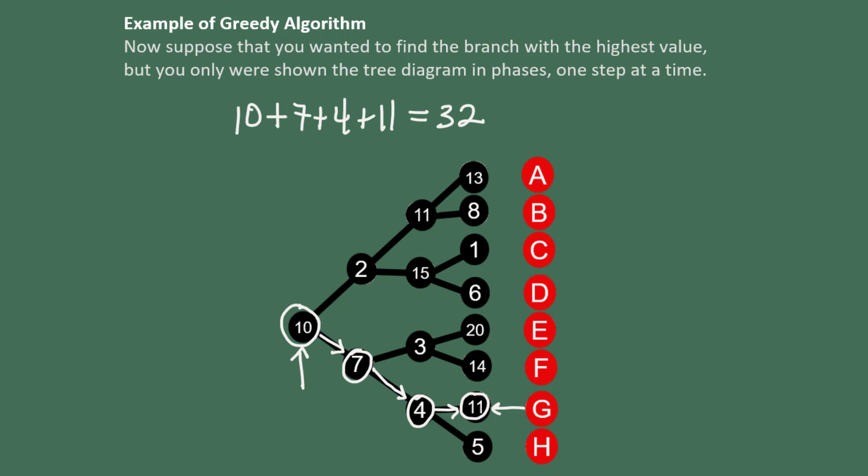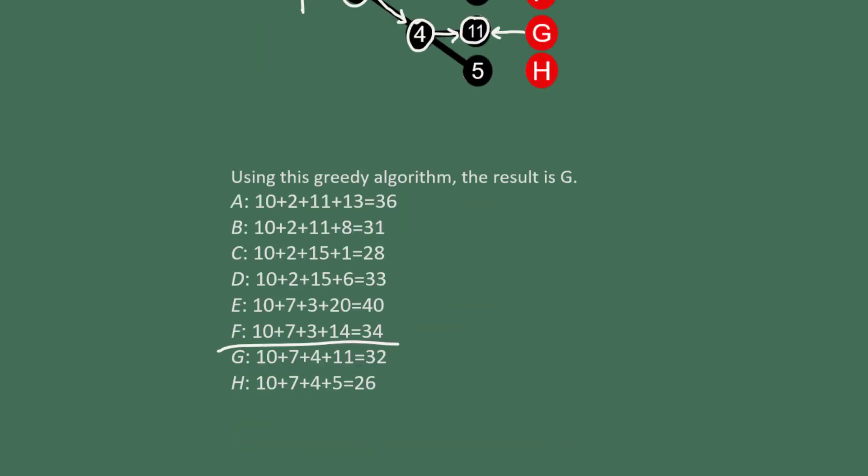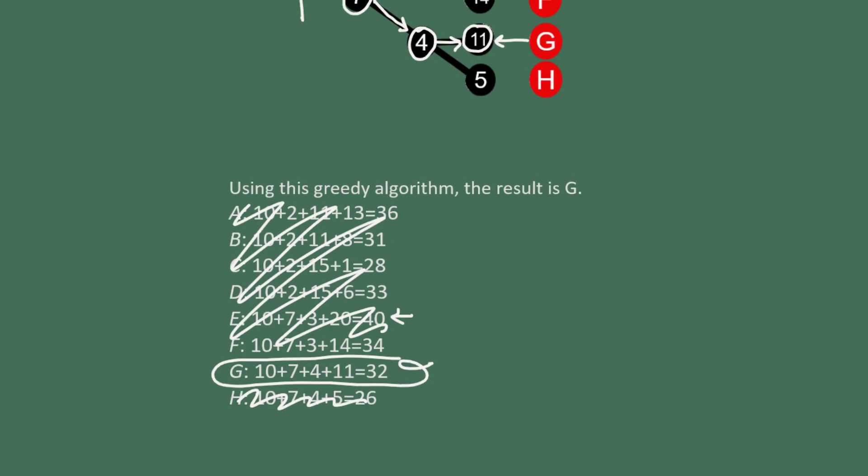At each stage, we chose the best option we had immediately in front of us, and we ended up with option G, which is not as large as option E. But the greedy algorithm doesn't reveal all of this information to us. What it does do is save us a bunch of time.